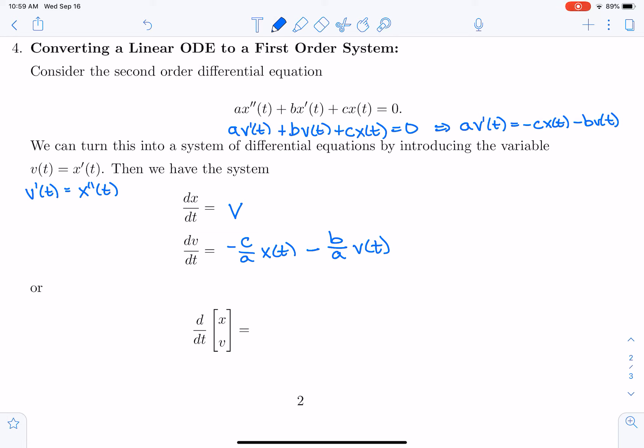And velocity. So I can rewrite this in matrix form as the derivative of X and V being 0, 1—times the vector X, V—and then minus C over A, minus B over A times the vector X, V. And so now I can see that there's a relationship between second order equations and first order systems of equations.